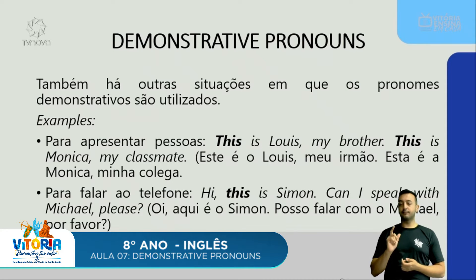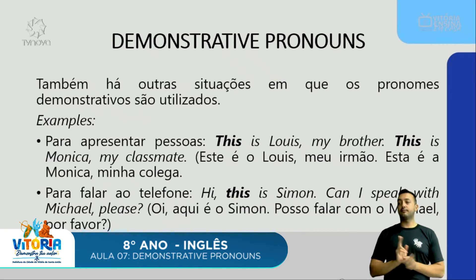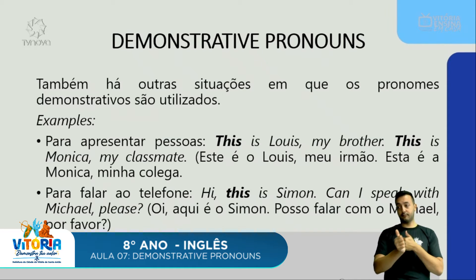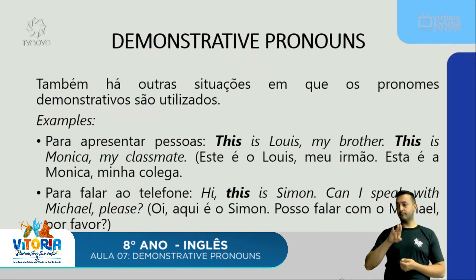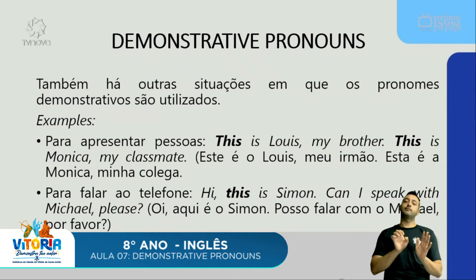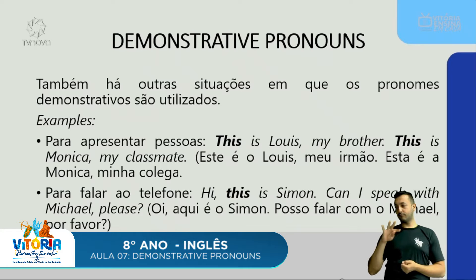Temos mais algumas situações em que os pronomes são utilizados. Se eu quero apresentar uma pessoa, eu utilizo o pronome demonstrativo. Se a pessoa está próxima a mim, vai ser o 'this'. Exemplo: 'This is Louis, my brother' — este é o Louis, meu irmão. Estou próxima ao Louis, então estou utilizando o 'this'. Outro exemplo: 'This is Monica, my classmate' — esta é a Mônica, minha colega.